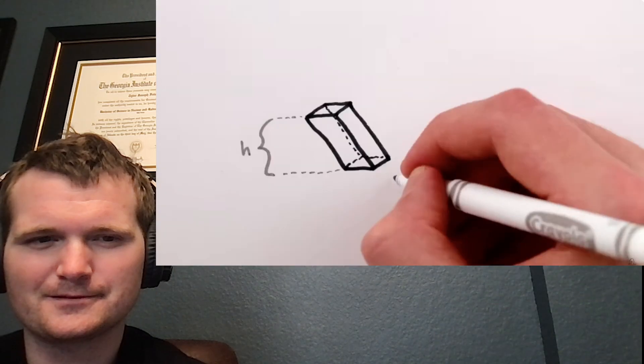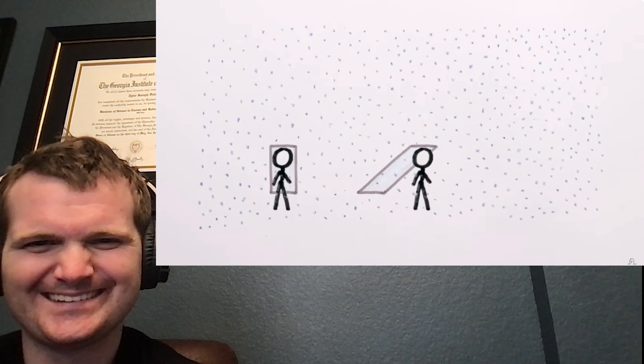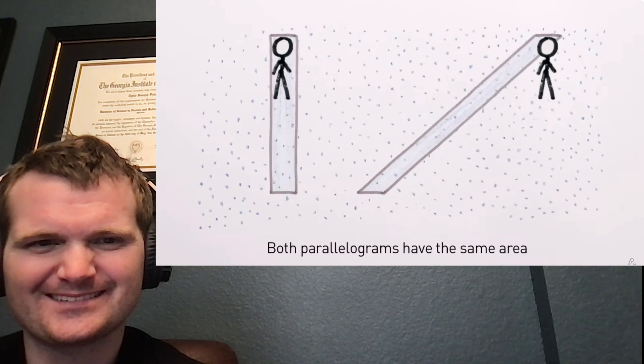And since the volume of a parallelopiped, that's a 3D parallelogram, doesn't depend at all on the slant, then no matter how fast you're moving horizontally, the same amount of rain will land on top of you each second.